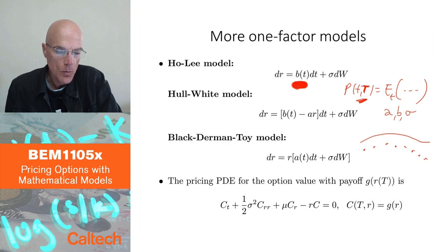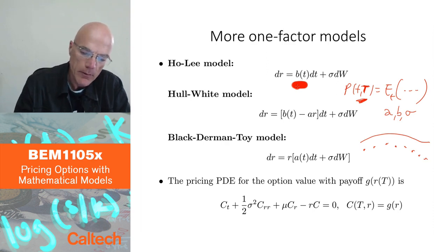All right, so that was the idea behind the Ho-Lee model. And then Hull and White said, well, yeah, that's a good idea, but it might be better to have mean reversion in the drift, so they subtract ar, for example, dt here, still have infinitely many parameters, but you also have mean reversion, if you choose b(t) appropriately. That's called the Hull-White model.